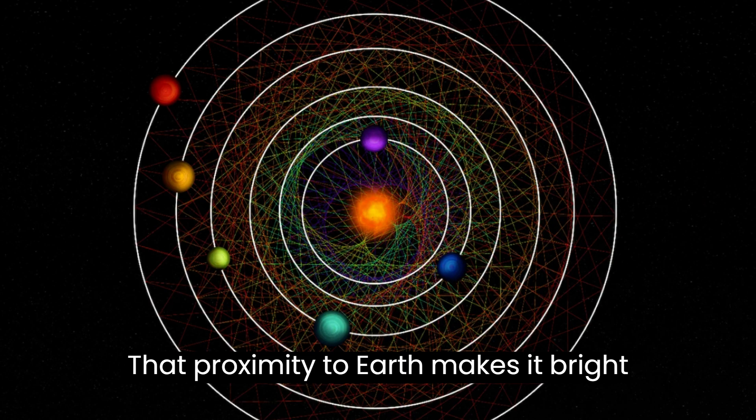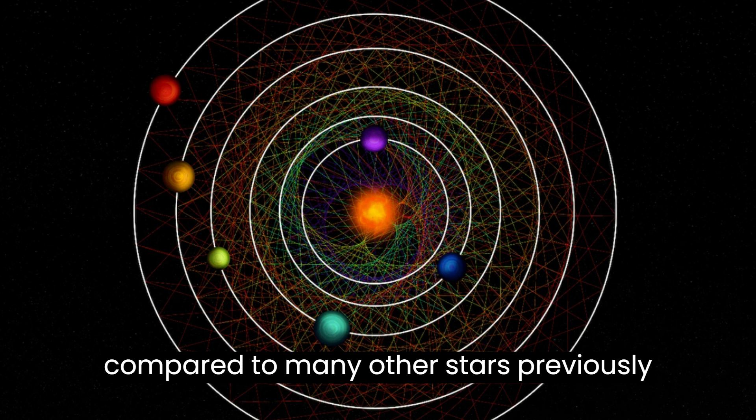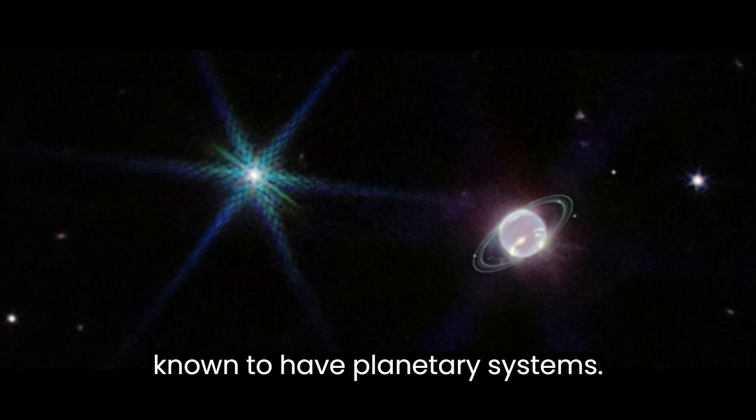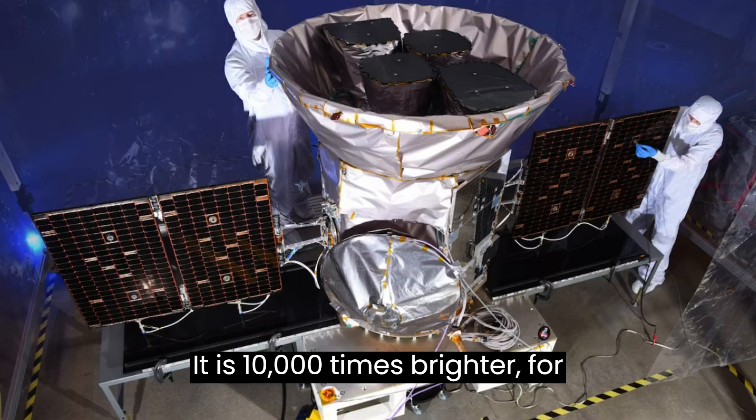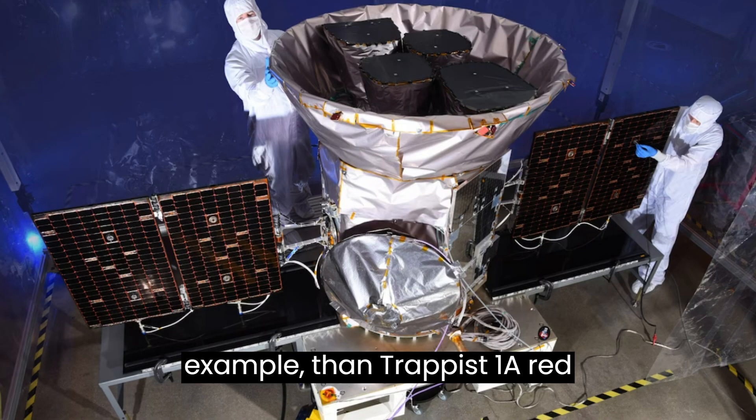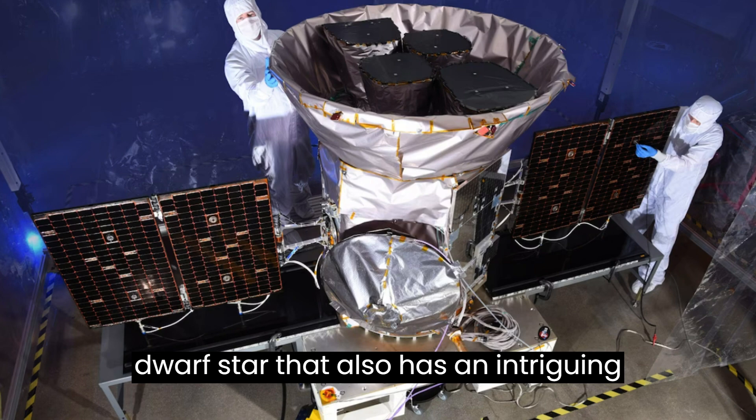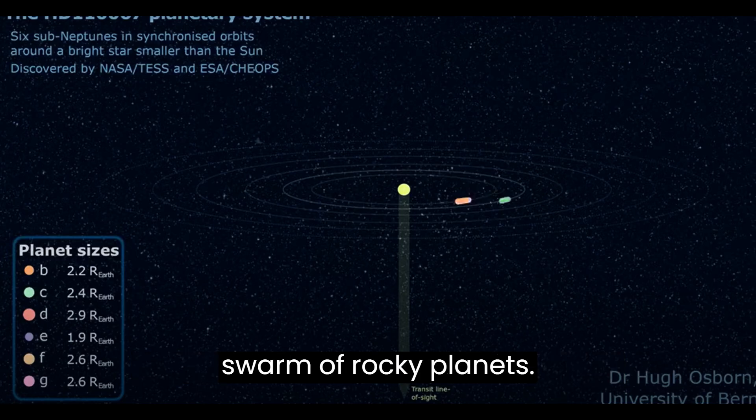That proximity to Earth makes it bright compared to many other stars previously known to have planetary systems. It is 10,000 times brighter, for example, than TRAPPIST-1, a red dwarf star that also has an intriguing swarm of rocky planets.